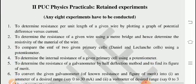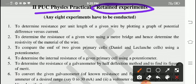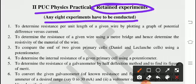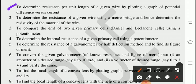Now these experiments also retained. See retained experiments. So these also are very very important. Any 8 experiments have to conduct. 10 will be given, 8 have to conduct. So in 8 we shall see the 10 also. The first one, to determine resistance per unit length of a given wire by plotting a graph of potential difference versus current. And the second one, to determine the resistance of a given wire using a meter bridge and hence determine the resistivity of the material of wire. The third one, to compare the EMF of two given primary cells, Daniel and Leclanche cells using a potentiometer.